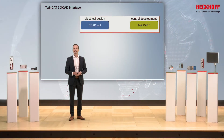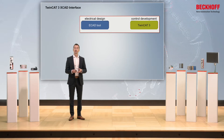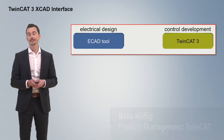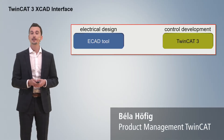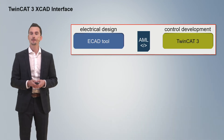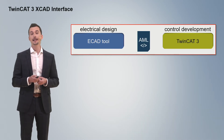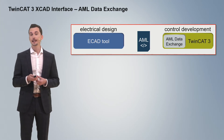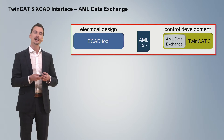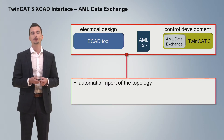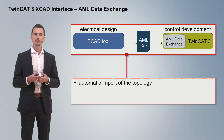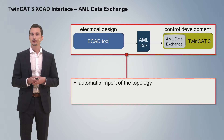With the TwinCAD 3 XCAD interface, you can easily exchange IO topology data between the electrical design and the software development. The new version is based on a standardized exchange format, the so-called AutomationML, and a new basic component in TwinCAD, the AMA Data Exchange. This component enables you to import an already existing IO topology into your TwinCAD project, which means the IO topology is automatically added to your TwinCAD project.